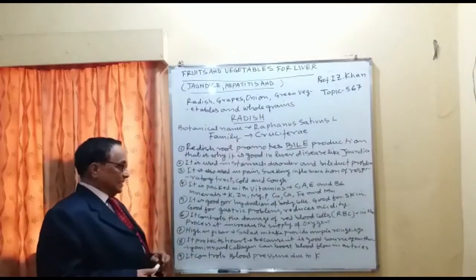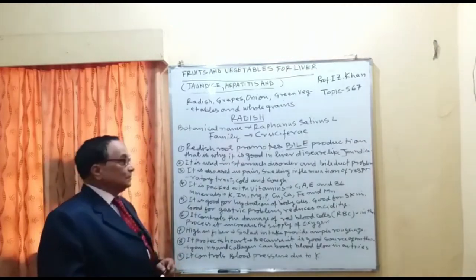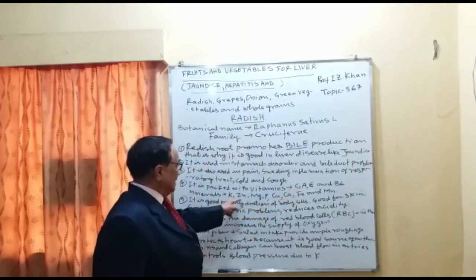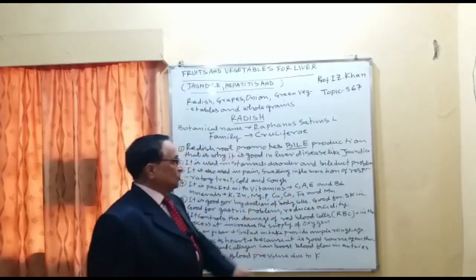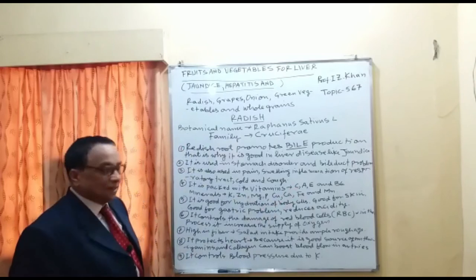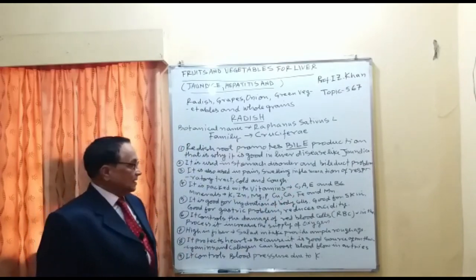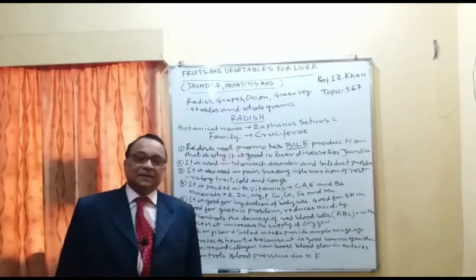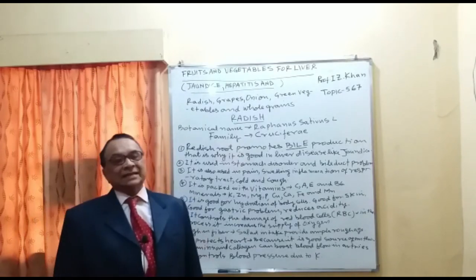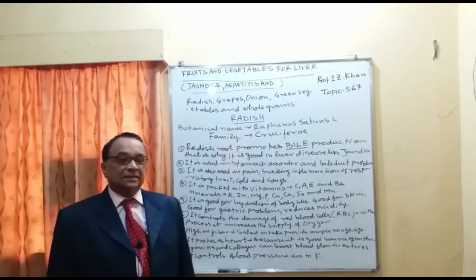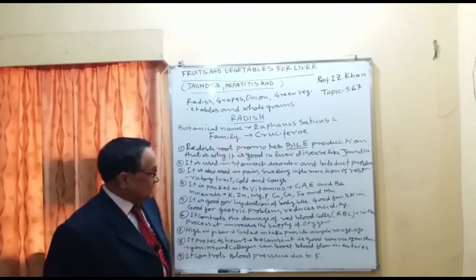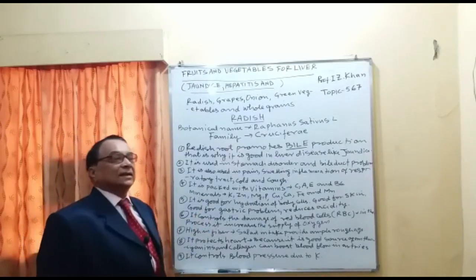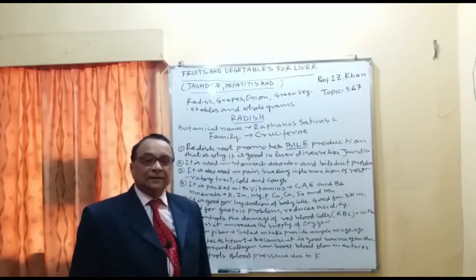Benefit number five: radish is good for hydration of body cells and good for skin because of the presence of vitamin E, zinc, and magnesium — it maintains healthy, shiny skin. It is also good for gastric problems and hyperacidity. In that condition, taking a radish salad will help a lot, drastically reducing gastric problems and acidity, because radish is an alkaline vegetable.